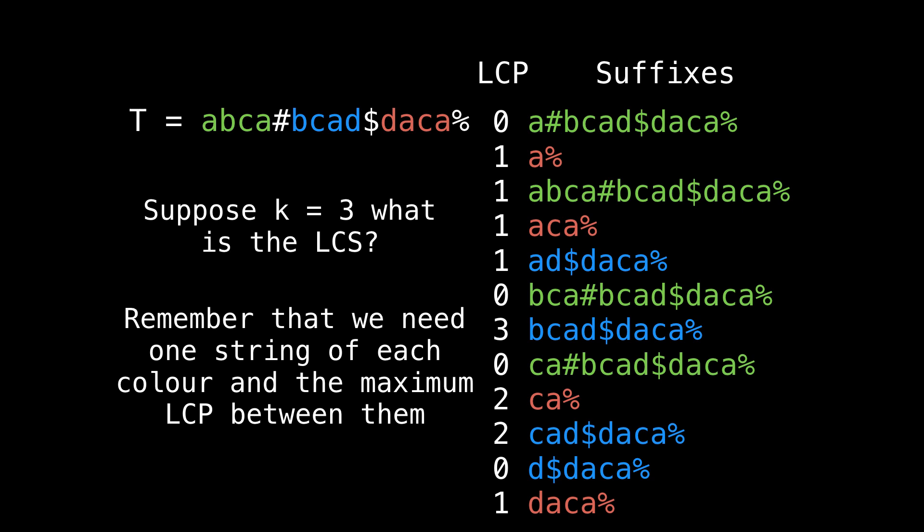So back to the central problem, how do we find the longest common substring of k strings, given that we now have the suffix array and the LCP array constructed? The answer is, we're going to look for k strings, each of different colors who share the largest LCP value.